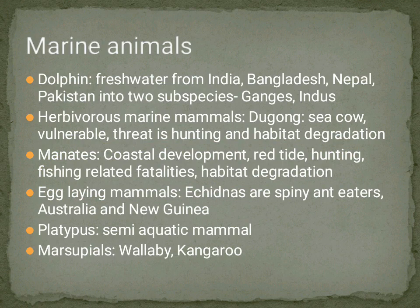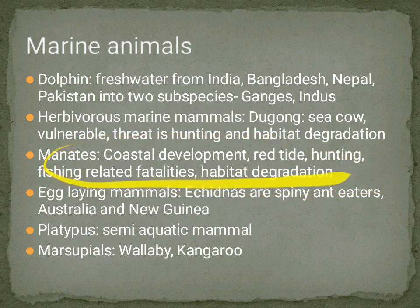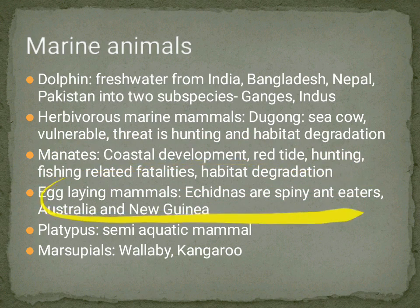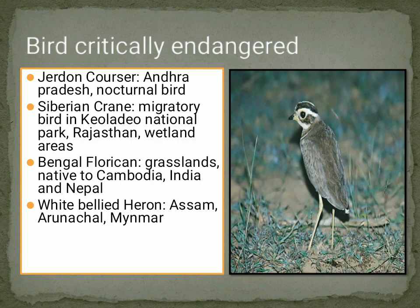Manatees are found in the Caribbean, Gulf of Mexico, and Amazon Basin. Egg-laying mammals include echidnas — which are spiny — found in Australia and New Guinea, and the platypus, a semi-aquatic mammal. Marsupials like wallaby and kangaroo are called pouch animals because the kangaroo carries its baby in a pouch.